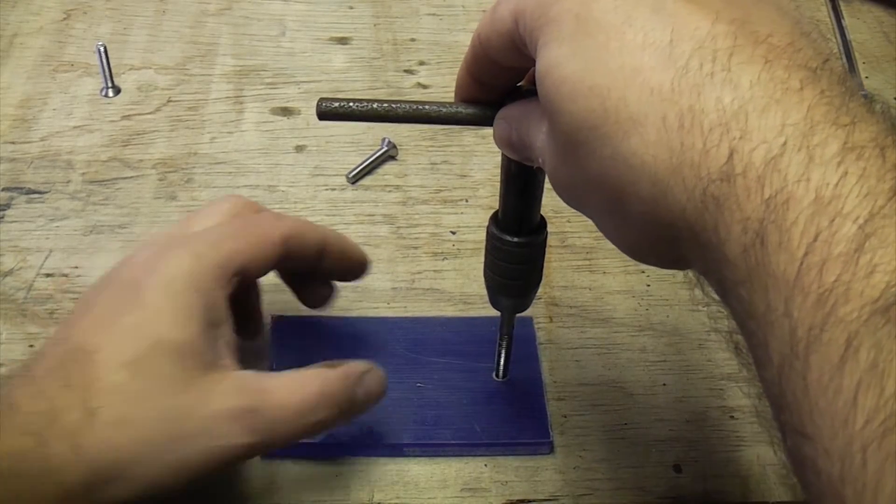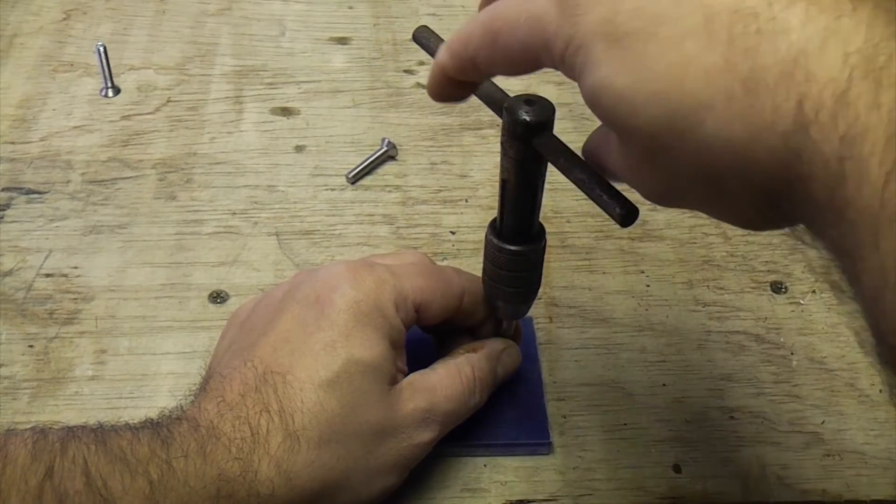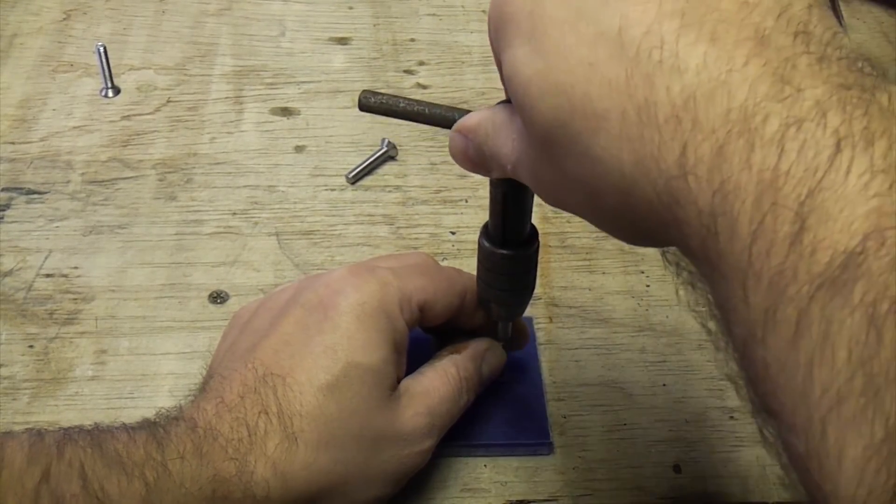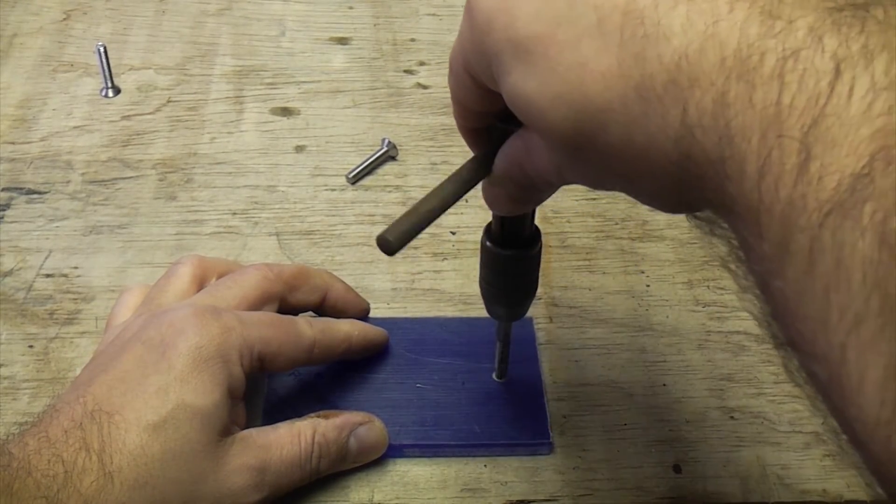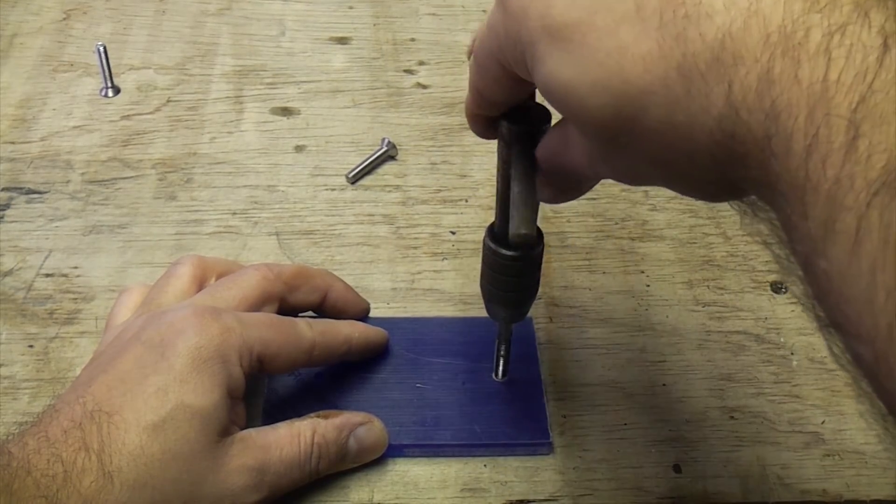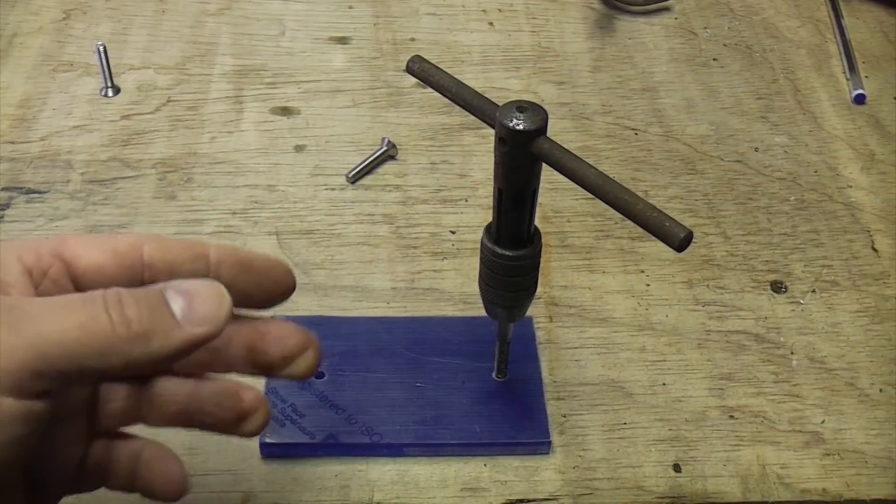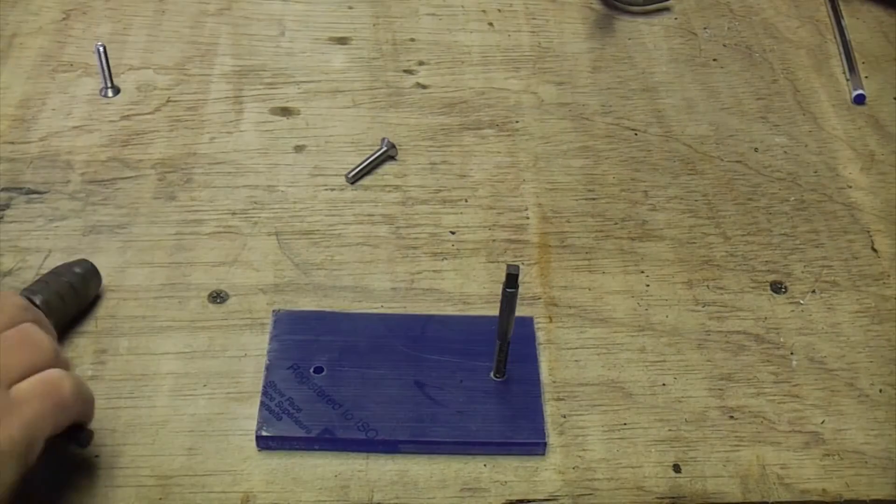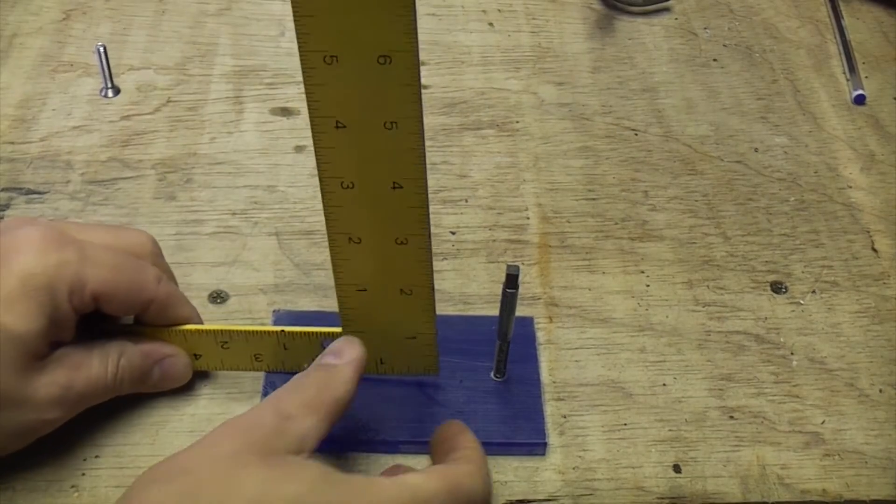To start it off, just get it straight and then give it a slight turn in a clockwise direction and you'll feel that the tap is actually starting to bite. Then when you've got it started, you can unscrew the tap handle and remove the handle, and then you can check that your tap is actually square.